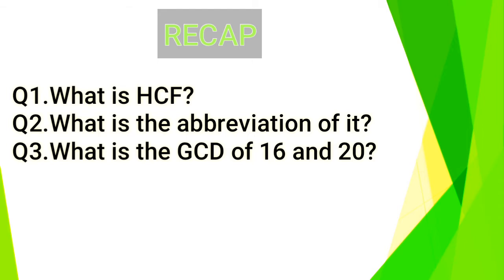Second question: What is the abbreviation of it? The abbreviation of HCF is highest common factor. Last question: What is the GCD of 16 and 20? So the GCD of 16 and 20 is 4.